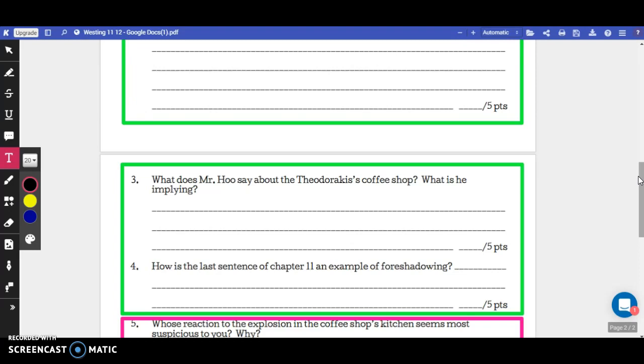For this question, you need to find the thing that Mr. Theodorakis says about the coffee shop and tell me what he means by it. He doesn't come right out and say it, but you need to tell me what it is that he's trying to say without actually saying it.